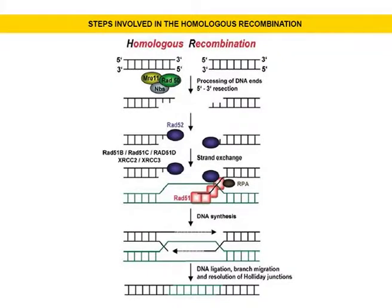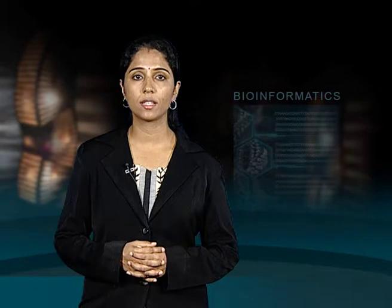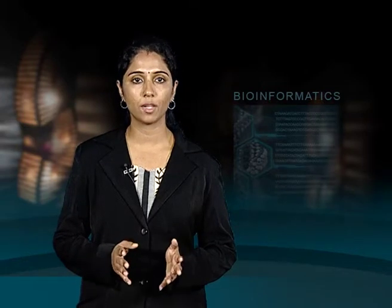Homologous recombination starts with resection of the double strand breakage in the 5 prime to 3 prime direction by the MRE11-Rad50-NBS1 complex, forming a 3 prime single stranded DNA fragment to which Rad52 binds. Rad52 interacts with Rad51 provoking a DNA strand exchange with an undamaged homologous DNA molecule. Assembly of the Rad51 nucleoprotein filament is facilitated by different Rad51 paralogs and BRCA2. The single stranded DNA is attached to a ring complex formed by Rad52, which protects against exonucleolytic digestion. Rad52 gene in humans synthesizes Rad52 protein, which interacts with Rad51 and replication protein A or RPA and activates Rad51.